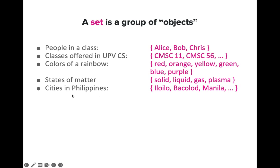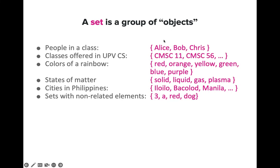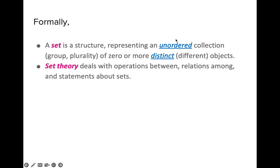We also have cities in the Philippines, which could include Iloilo, Bacolod, or Manila. And we could also have a set with non-related elements, like the number 3, a letter A, a color red, and an animal — dog. So as you can see, a certain set is composed of a group of elements. The elements are enclosed in curly braces and separated by commas. Formally, a set is a structure representing an unordered collection of zero or more distinct objects.